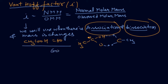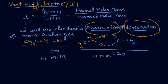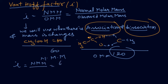Due to association via hydrogen bonding, the mass increases. The normal molar mass is 60, but the observed molar mass after association becomes 120. So the normal molar mass is 60 and the observed molar mass is 120.